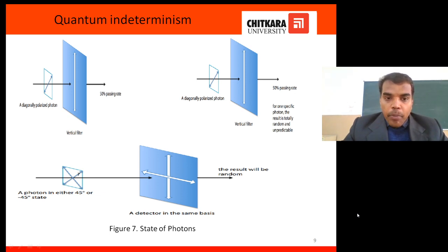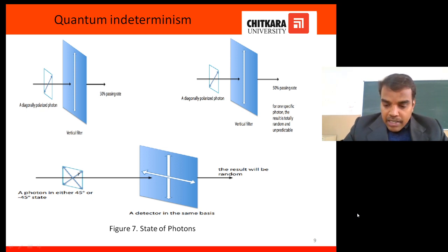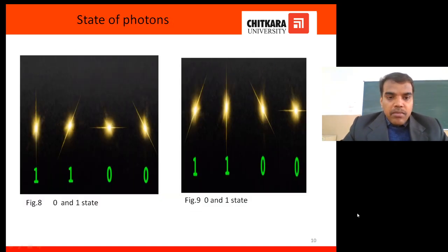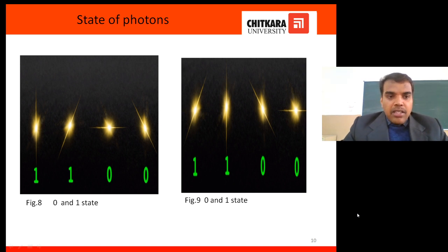The same logic applies to the horizontal polarizer — the horizontal state can be represented as zero. Quantum computers use qubits, which take four states at the same time: vertical, horizontal, plus 45, and minus 45. If vertical is one, horizontal is zero; plus 45 may be zero or one; minus 45 may be zero or one. This uncertainty principle is very useful for developing new generation algorithms. The same photon can represent four bits at a time.